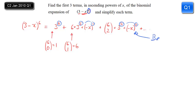The other thing that's really important here is to have the brackets around the minus x. If you just wrote minus x squared without the brackets, that would not get you a method mark. So it's important to include the brackets.